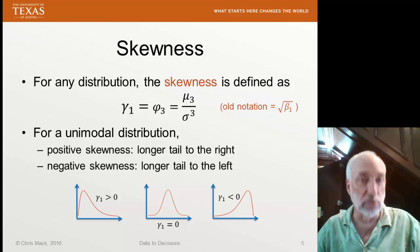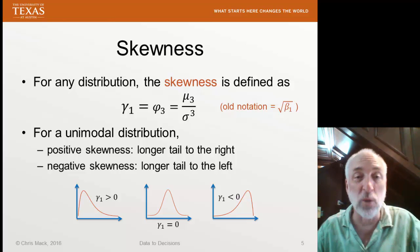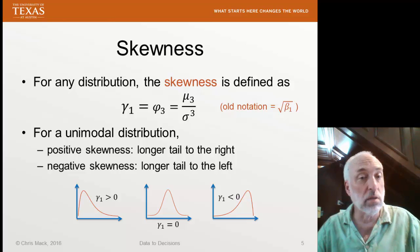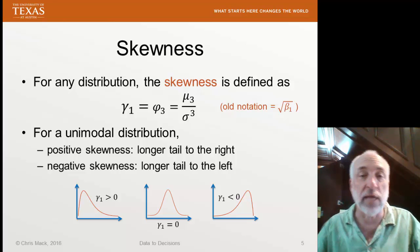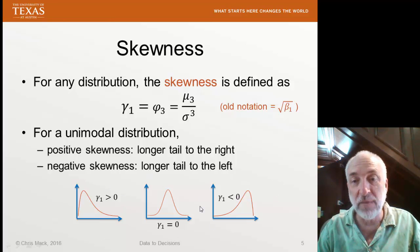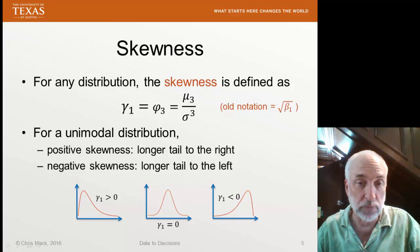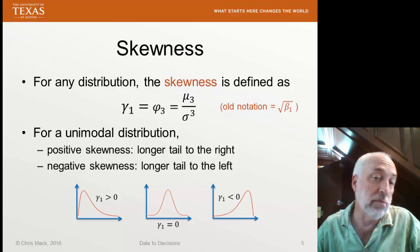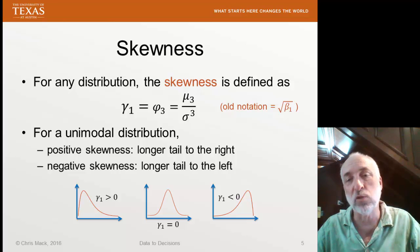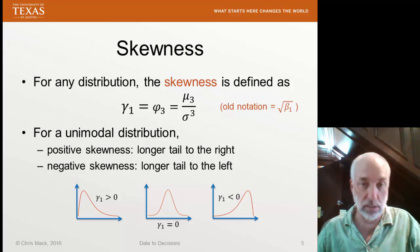If we have a unimodal distribution — and that's all we're going to deal with here — then it's easy to interpret what gamma_1 means. If gamma_1 is positive, it means our distribution is skewed to the right; the tail is longer to the right. If gamma_1 is negative, that means it's skewed left; the tail goes a long way on the left. And if gamma_1 is zero, that means we have a symmetric distribution. We can look at the sign of gamma_1 to tell us which direction it's skewed, and the magnitude to see how skewed it is.